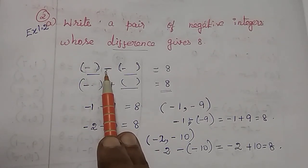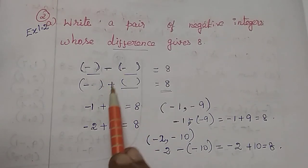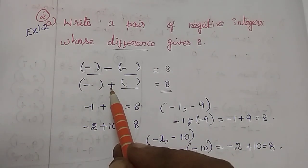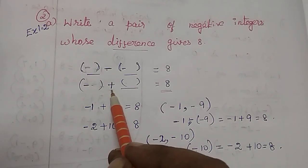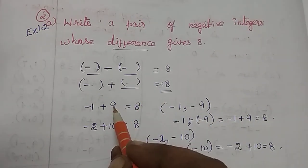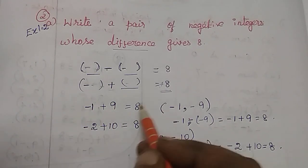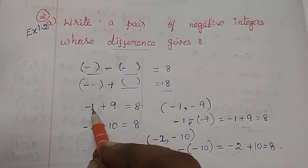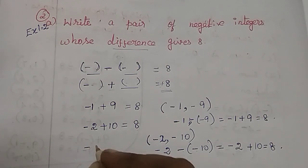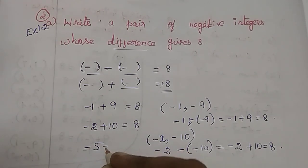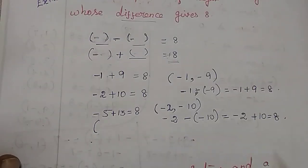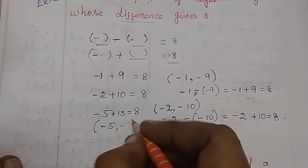So, with two minus numbers, when we subtract, to get answer 8, minus into minus becomes plus — one number is minus, one number becomes plus. The bigger number takes the sign. So if we take minus 5, to get difference 8, we need plus 30? No — 5 plus 8 is 13... actually if minus 5 needs difference 8, we take plus 30 giving minus 5 minus (minus 30) = 25, not 8. The correct example: minus 5 with difference 8 gives pair minus 5, minus 13 — following the pattern that 9 minus 1 is 8, 10 minus 2 is 8.